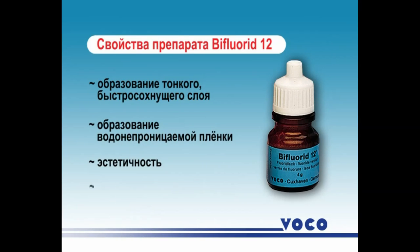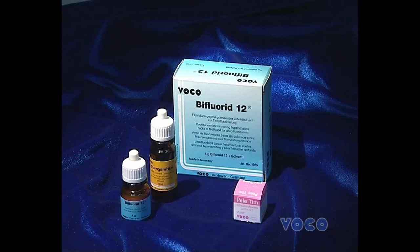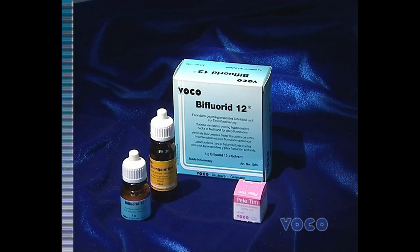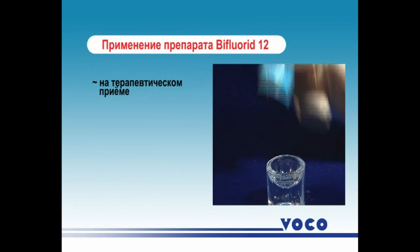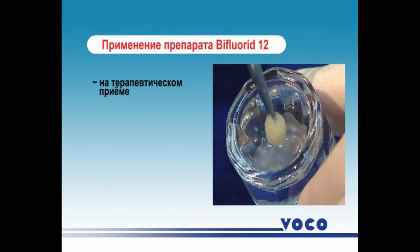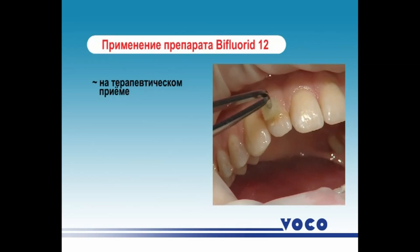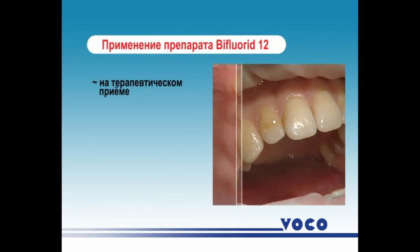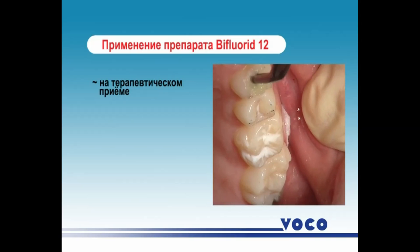B-fluorid 12 has the following properties: formation of a thin, translucent layer; formation of a waterproof film; and colorlessness, meaning it is aesthetic and does not change the color of teeth or restorations. B-fluorid 12 is used as a therapeutic reception in the treatment of caries at the stain stage, fluid caries, tooth hyperesthesia, and wedge-shaped defects.